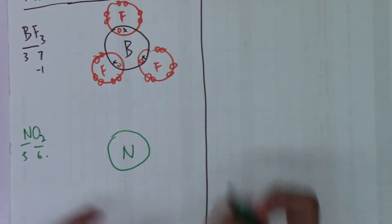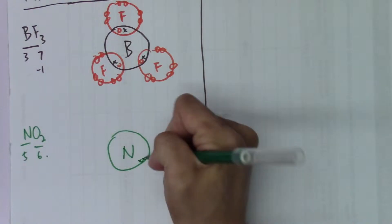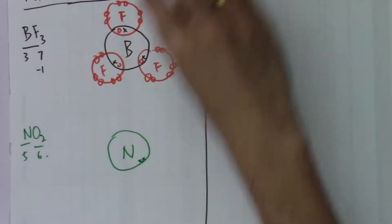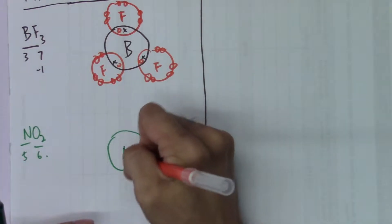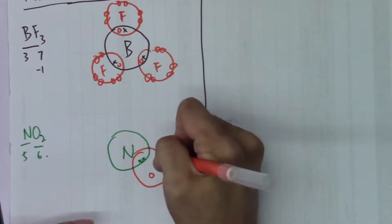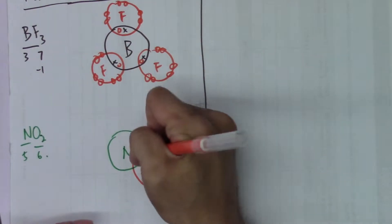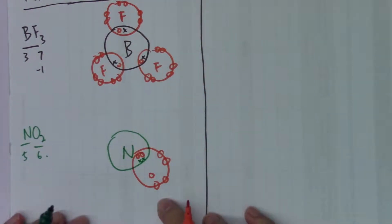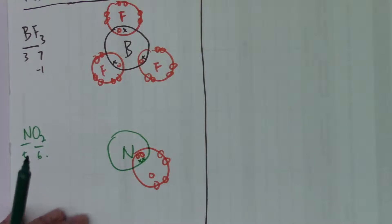What nitrogen is doing here is sharing two electrons with a nearby oxygen atom. So oxygen gets one, two, three, four, five, six, seven, eight electrons — this oxygen is now octet, with eight electrons.